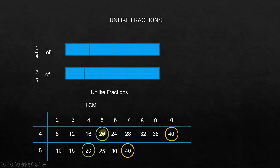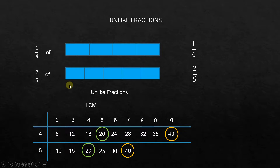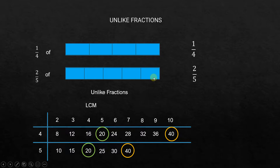There may be additional common multiples further down, like 40, but we are concerned about the lowest common multiple. If we can divide both into 20 parts, that is good enough for us to compare units of the same size and do the addition. We want the smallest number of units we can divide each into so that both are divided into 20 equal units.